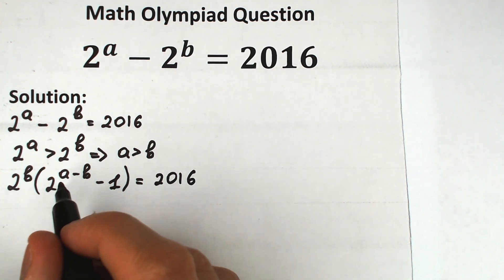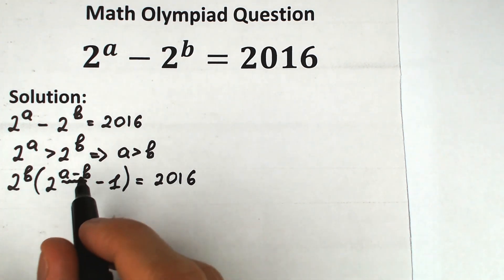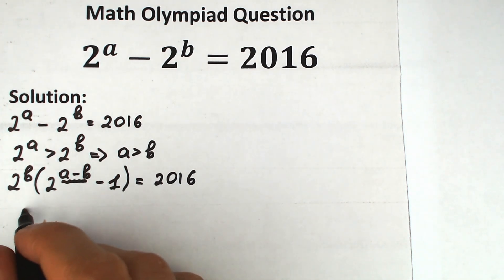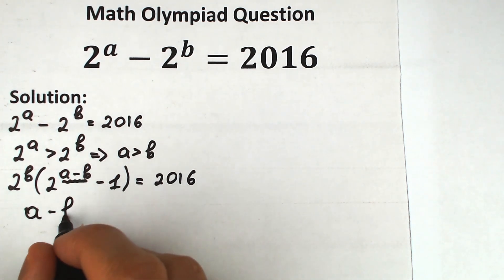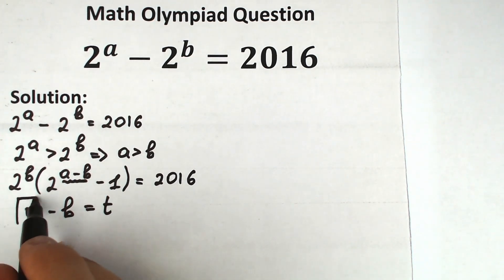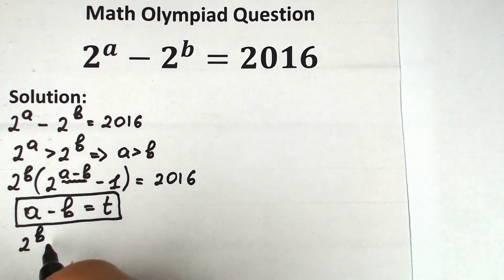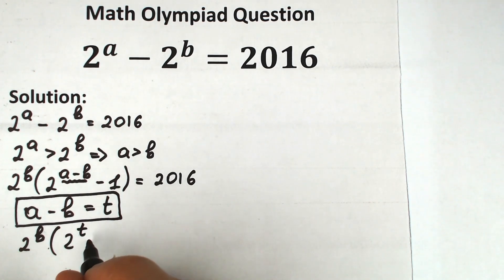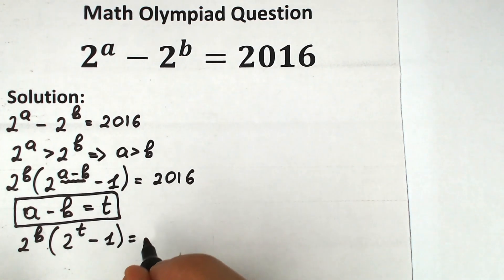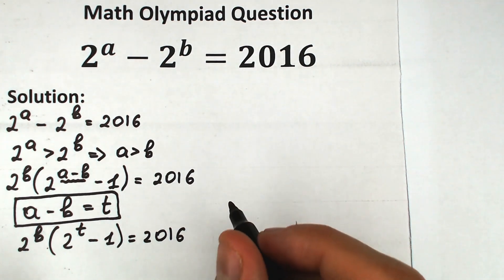Right now I suggest a substitution because A minus B is awkward to work with directly. Let A minus B equal T. With this substitution, our expression becomes 2 to the power B times, in parentheses, 2 to the power T minus 1, equal to 2016.